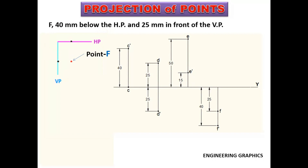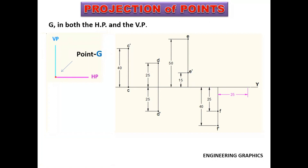Point G is in both the HP and the VP. Since the point is in HP, elevation will be on the XY line. Point G is in VP also, therefore plan will also be on the XY line.